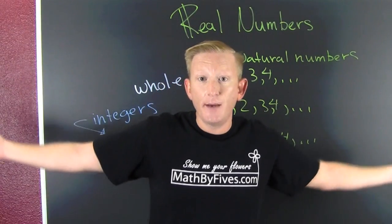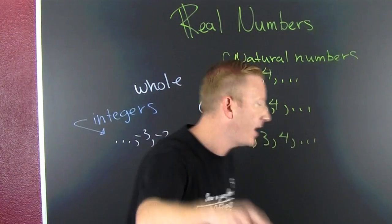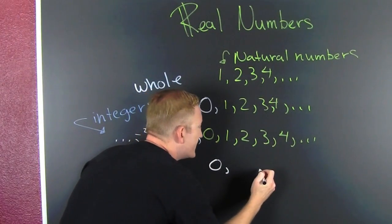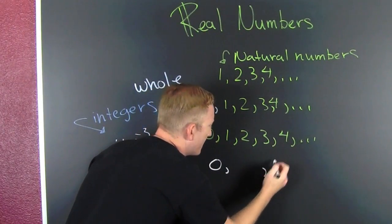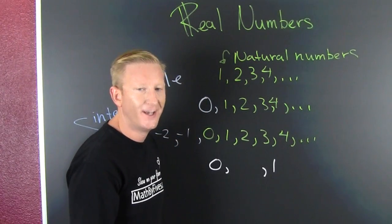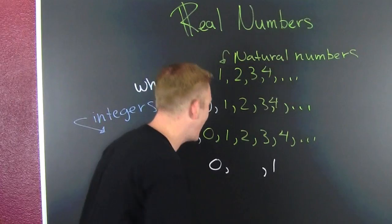But wait, there's more action. I'm talking about fraction action. I'm talking about - are there any numbers in between zero and one? Go ahead, tell me one.